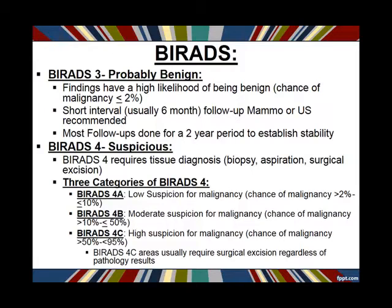BI-RADS 3 is our probably benign category, and a lot of things end up here. When a radiologist finds something on a mammogram or ultrasound and characterizes the area, they determine if it fits into benign, probably benign, or suspicious categories. Probably benign means they think there's a very good chance it's going to be benign — it has all benign features and the chance of malignancy is less than two percent. In these cases, we usually do a short-interval follow-up, either mammogram or ultrasound, every six months for two years to make sure it's stable.